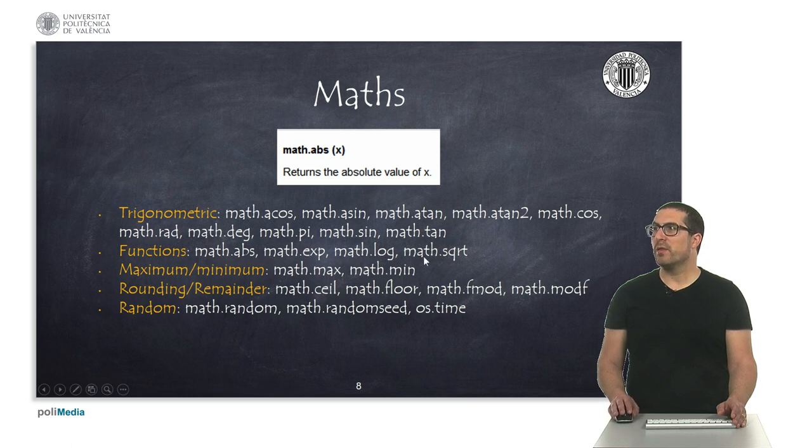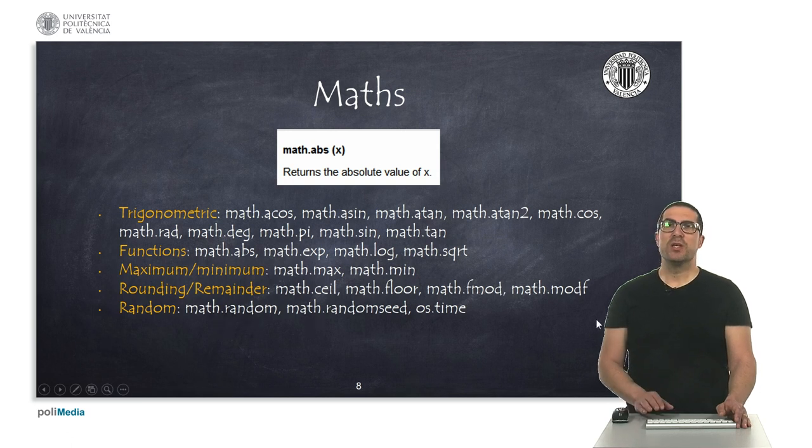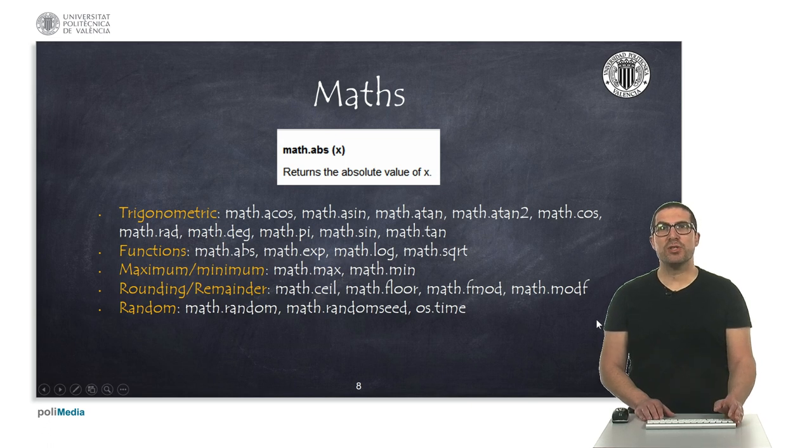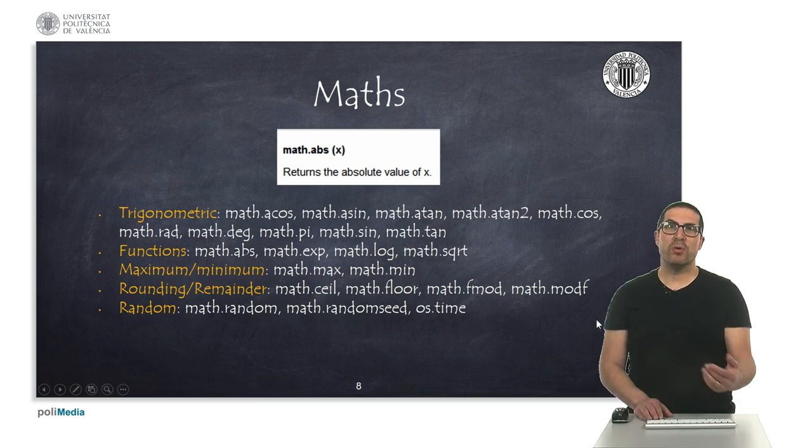exponential, logarithm or square root. We have functions to compute the minimum and maximum of numbers, to do some rounding like ceiling and flooring operations, and also to get the remainder of values, and also to obtain random numbers. So, the documentation for these functions is something more specific, and you can access that if you Google it, and then you get more information if you don't know how to use them, but they are quite standard.